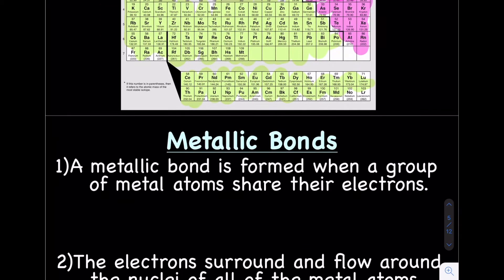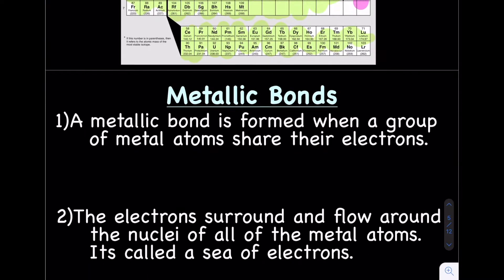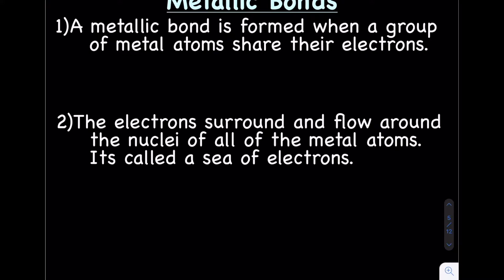Next up is a metallic bond. Metallic bonds are formed when a group of metal atoms share their electrons. With an ionic bond, a metal loses an electron and the non-metal gains one — it's a stealing sort of thing. With a metallic bond, they're sharing their electrons. The nuclei of all the metal atoms are near each other with all their electrons flowing around all of those nuclei — and we call this a sea of electrons.